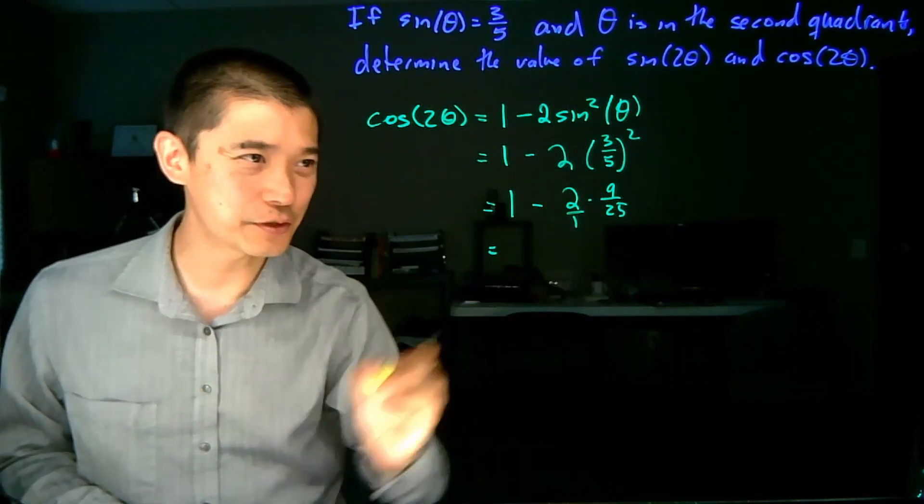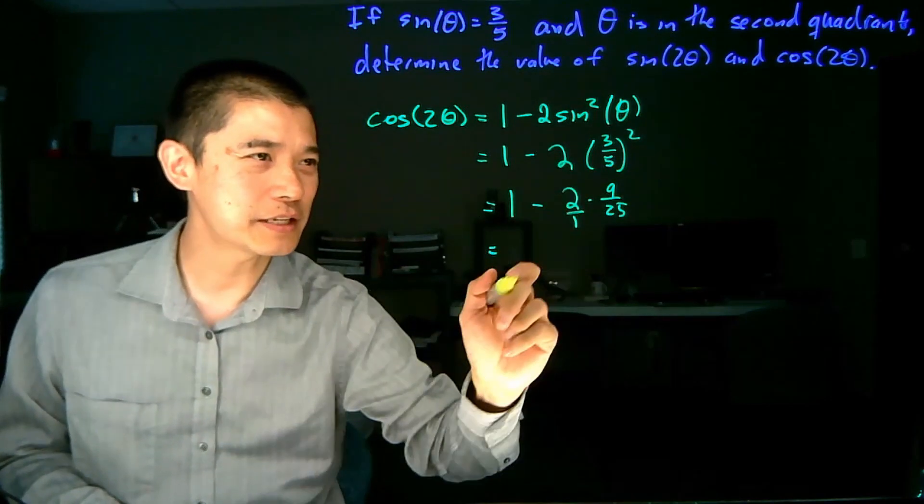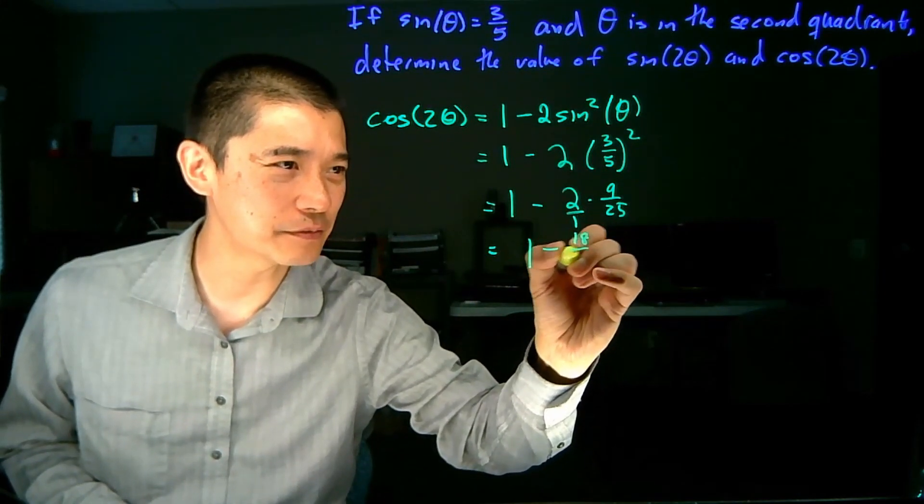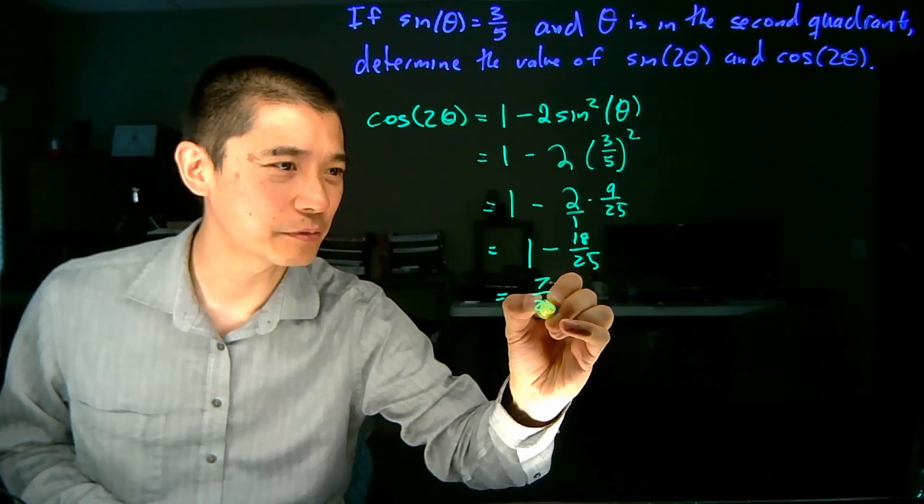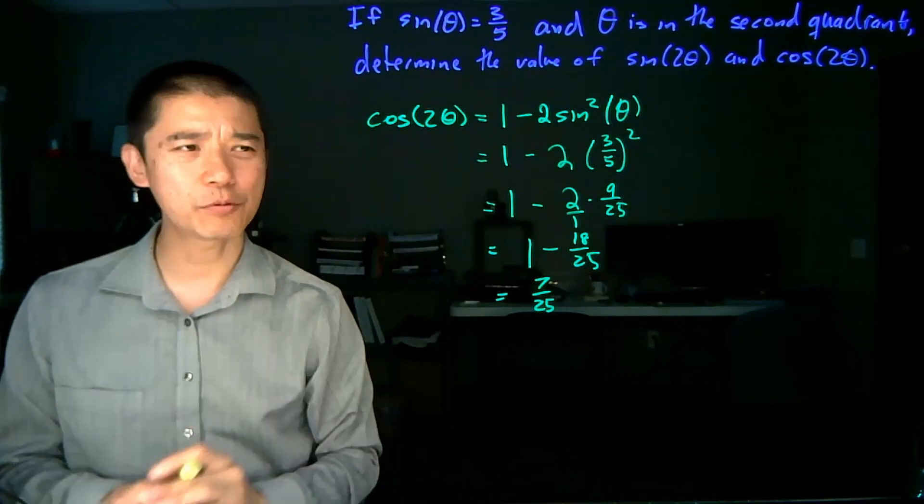You might remember that if you have an integer, you can always put it over 1. So 18/25, 1 minus 18/25, which is equal to 7/25. And that's one of our two values.